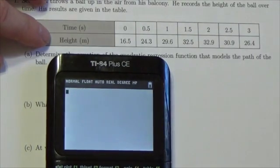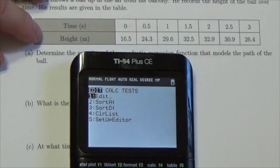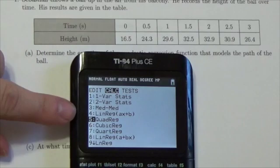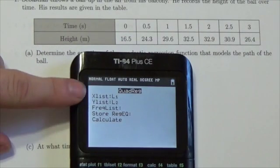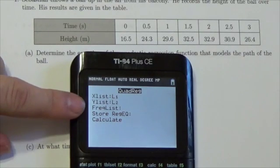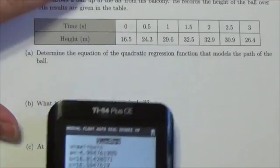Now I'm going to quit. And out here we're going to press stat over to the calc, because the question tells us to do this as a quadratic regression. It defaults to x list is list one, y list is list two. Press enter on calculate, and so here we go.